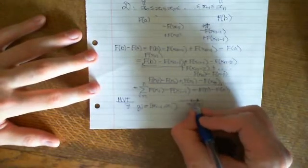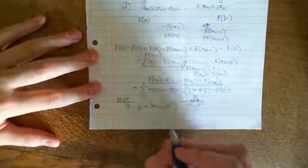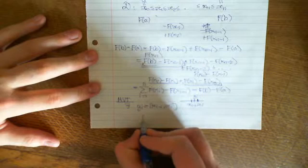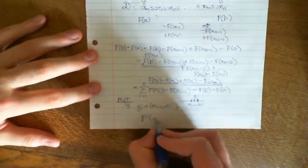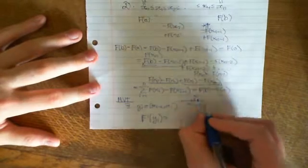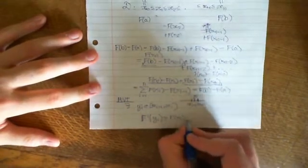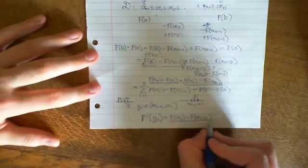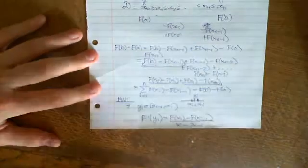And we've got some point in here, which is yᵢ. All I'm saying is that we're using the mean value theorem to tell us that there is a point where the derivative of big F evaluated at yᵢ is equal to the finite derivative, in a sense.